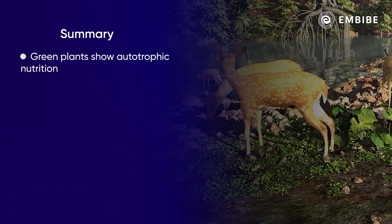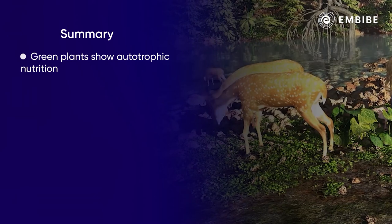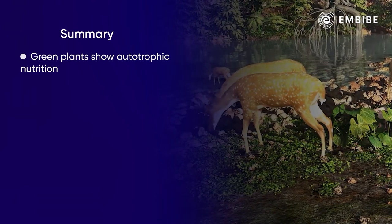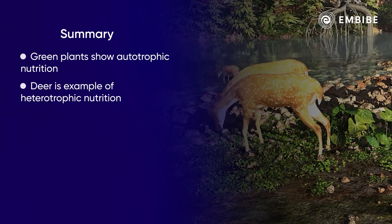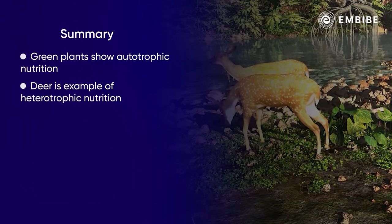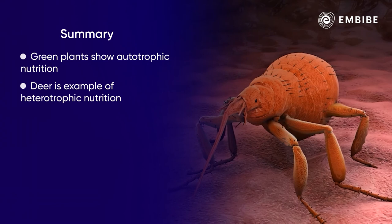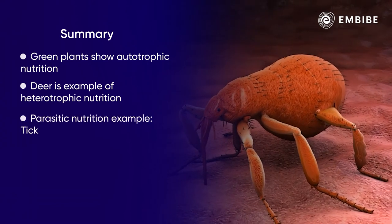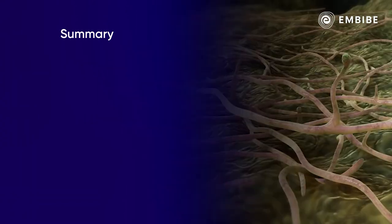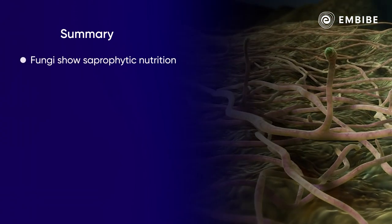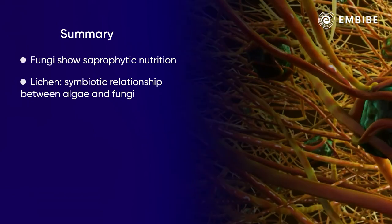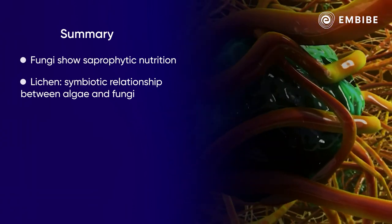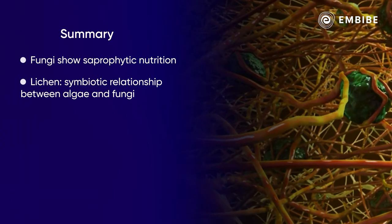To summarize: green plants show autotrophic nutrition, while all other organisms are heterotrophic as they depend on plants for food directly or indirectly. If nutrition is obtained by living on or in another living organism, it is called parasitic nutrition — an example being the tick on a deer. Fungi exhibit saprophytic nutrition. Moreover, in the symbiotic relationship exhibited in lichen, the algae and fungi mutually benefit each other, living in a close relationship.